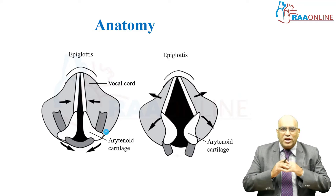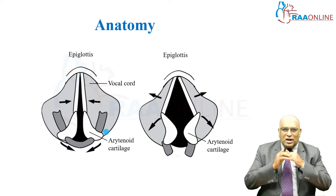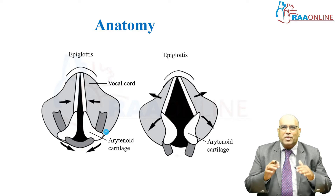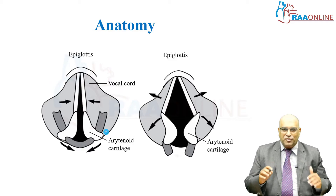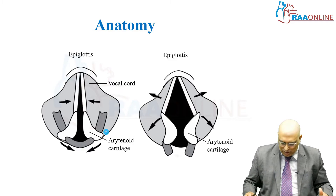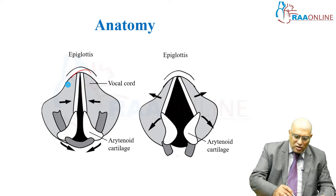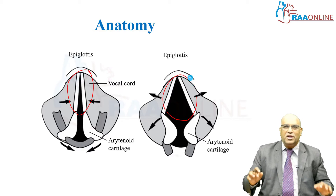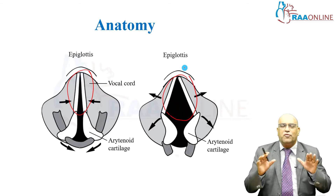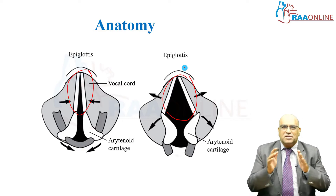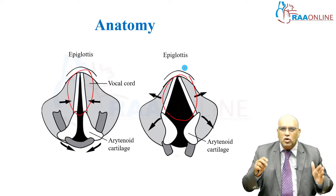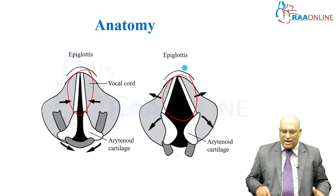Before going into laryngospasm, a few anatomical aspects are very, very important. This is the closed portion of the larynx and this is the open portion of the larynx. You have to understand that certain muscles close the larynx and certain muscles open the larynx.